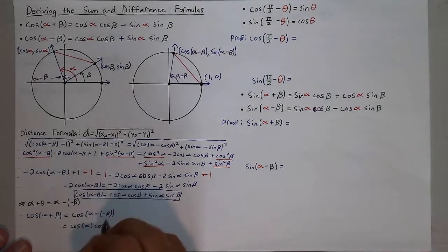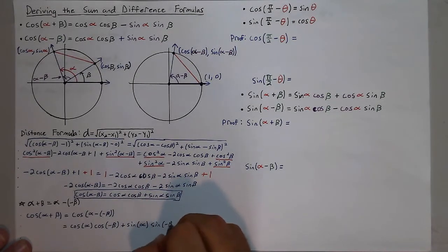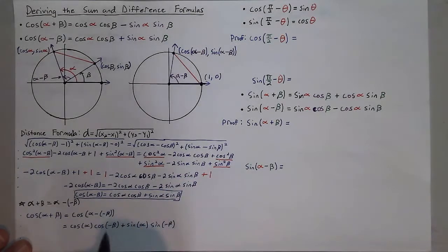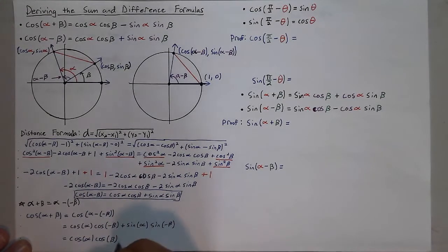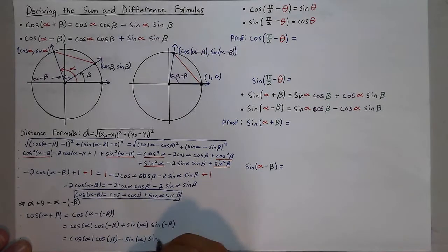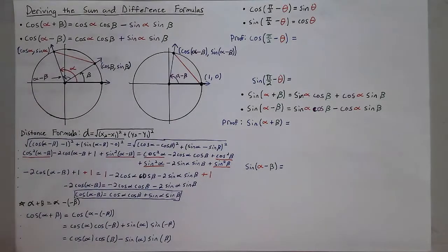That gives me cosine of alpha times cosine of negative beta plus sine of alpha times sine of negative beta — because instead of minus beta it's minus negative beta. Cosine is an even function, so the negative goes away, giving cosine of alpha cosine of beta. Sine is an odd function, so the negative comes out, giving minus sine alpha times sine of beta. That's where the other cosine sum formula comes from.